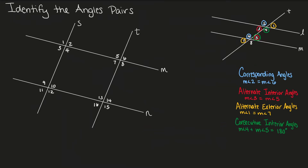Now let's look at some examples where we need to identify the angle pairs within two parallel lines and a transversal. In this example, lines S and T are parallel and lines M and N are parallel as well. Let's start with angle 1 and angle 12. They are both on the exterior of our parallel lines and on opposite sides of our transversal, so they're alternating. That means angle 1 and angle 12 are alternate exterior angles.